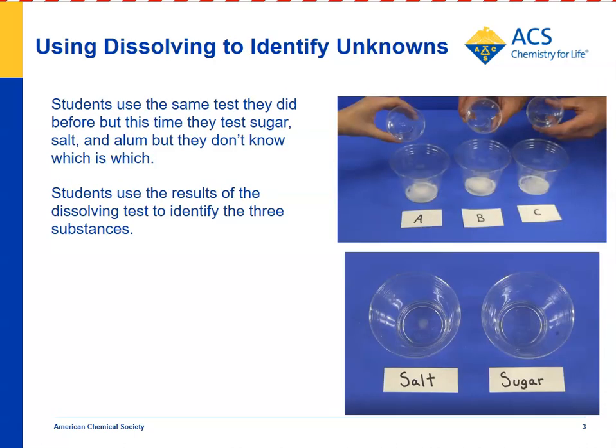What the teacher does next is introduce an unknown — alum — to the experiment. Instead of telling students which is salt, sugar, and alum, they're just labeled A, B, and C. The idea is for students to use what they've already seen about salt and sugar to see if they can use a dissolving test to identify them, with the remaining one being the unknown.